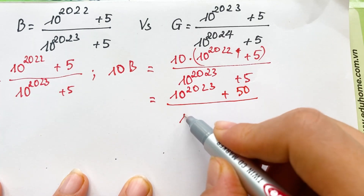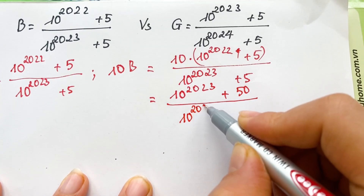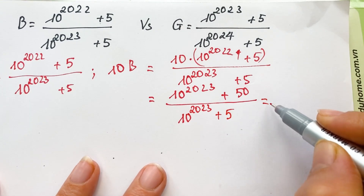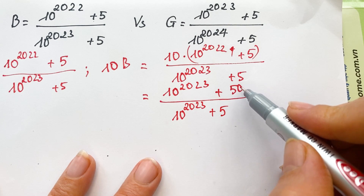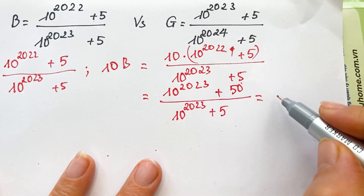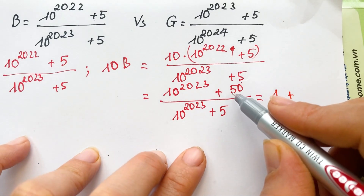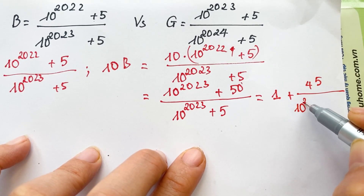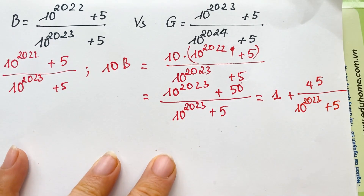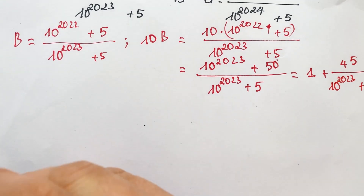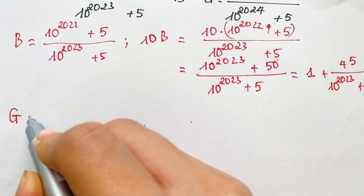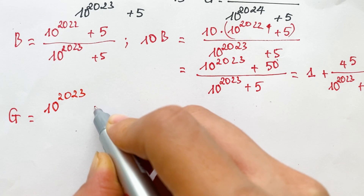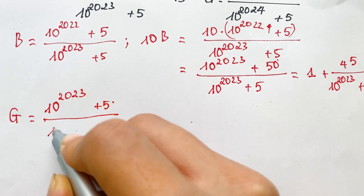So this equals 10 power 2023 plus 50 over 10 power 2023 plus 5. We can break down 50 as 45 plus 5, so therefore we have 1 plus 45 over 10 power 2023 plus 5.